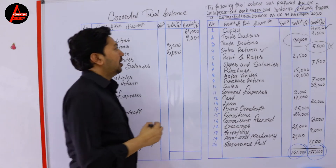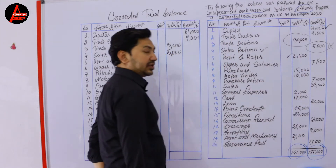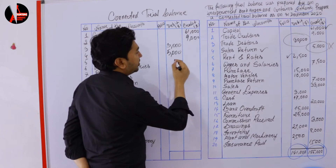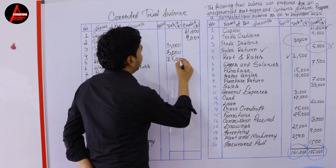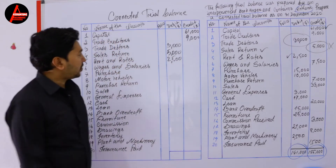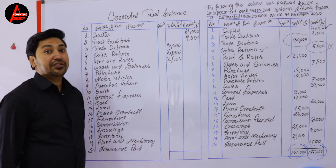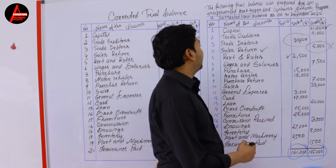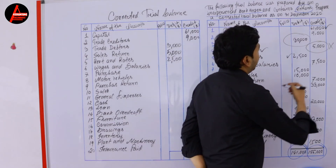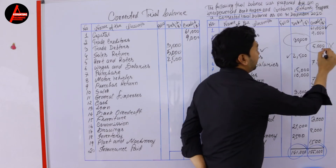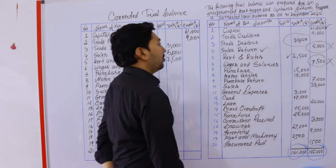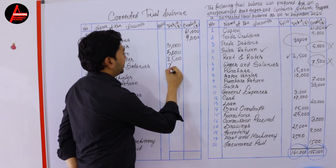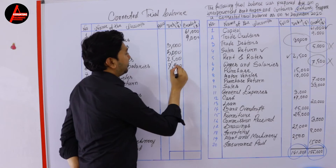Next is rent — an expense, and expenses are debited. Then salary and wages — this is also an expense, and expenses are debited. But look what this bookkeeper did: he wrote salary and wages on the credit side, which is not correct. It must be debited. Write on the debit side: 7,500 dollars.